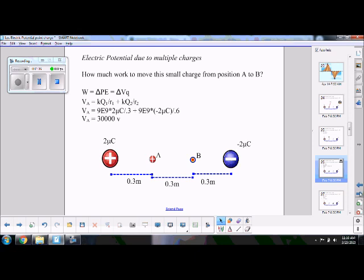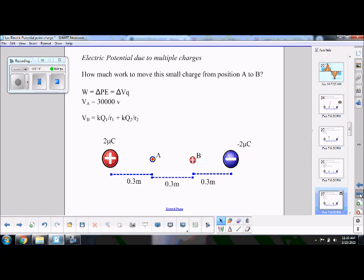If you do the same math for point B, same KQ over R, KQ over R, but now we're just changing the numbers with a larger negative and a smaller positive. And you end up, sorry, I should rephrase that. It's not a bigger negative, it's just the negative is closer. You end up with a negative 30,000 volts. It should be kind of logical, since it's symmetrical. Whatever this value is, this value should be the same, just a negative value.